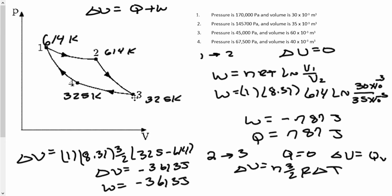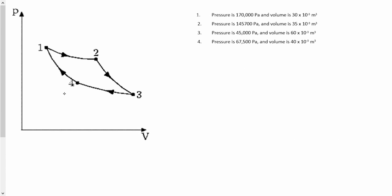Of course, we do have going from 3 to 4 and then 4 back to 1. Let's go ahead and do those just to make sure that you've got it. So let's make sure we rewrite our temperature here. This is 325 and that's Kelvin. And this is 614 Kelvin.